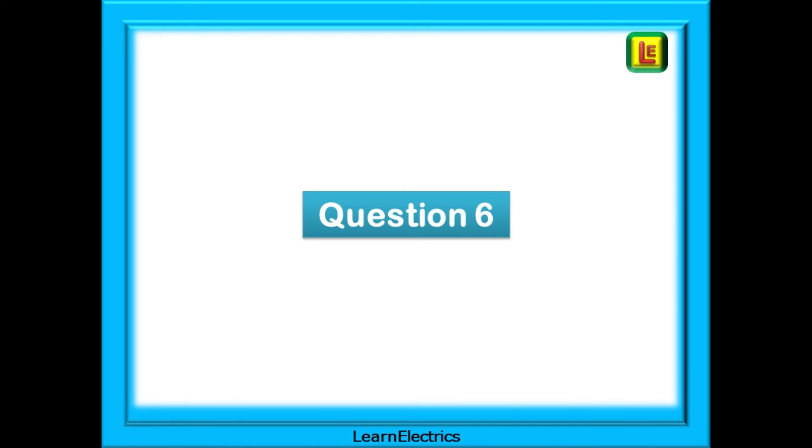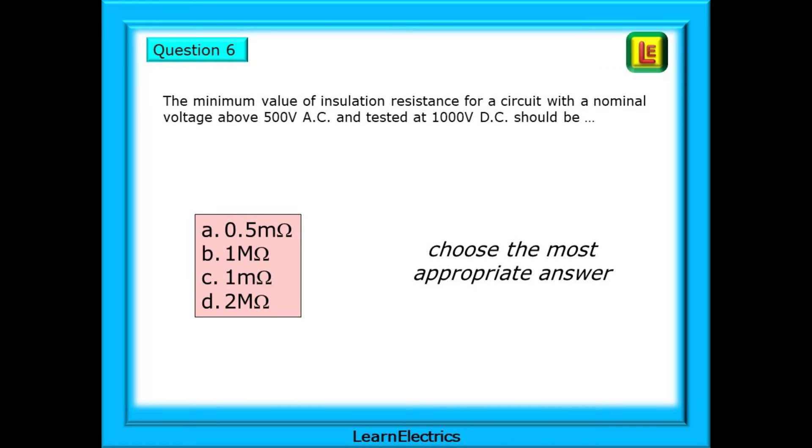Question 6 is next. Here's the question. The minimum value of insulation resistance for a circuit with a nominal voltage above 500 volts AC and tested at 1000 volts DC should be, and we have four choices of answer. Pause the video and choose the most appropriate answer.